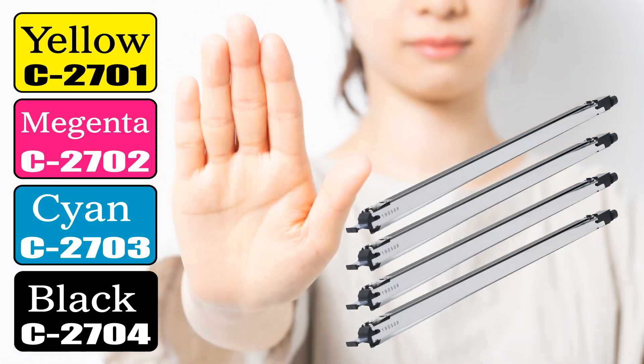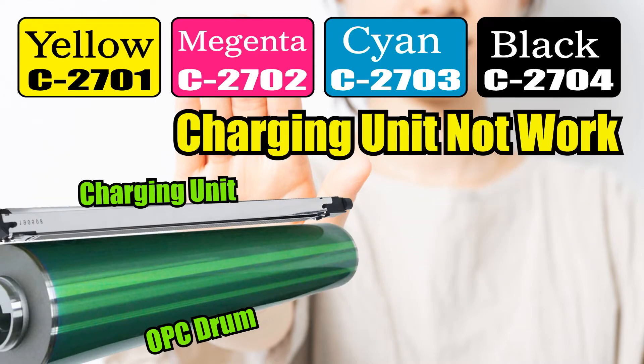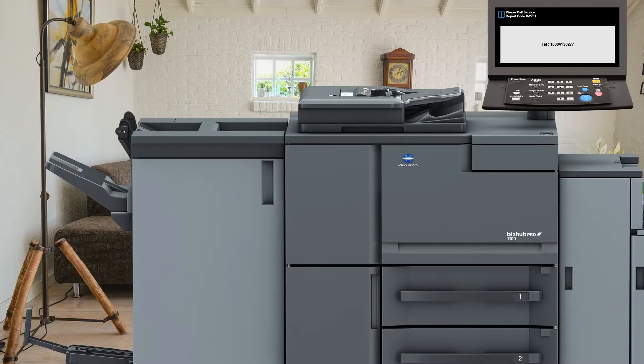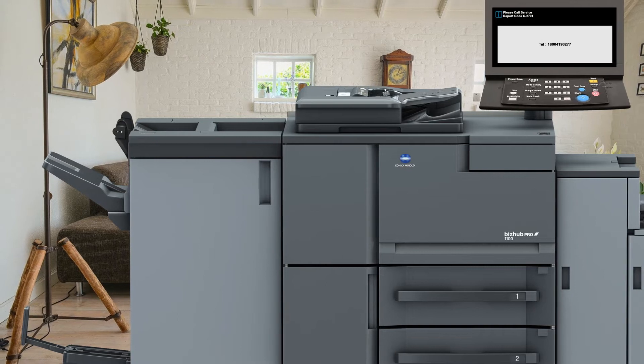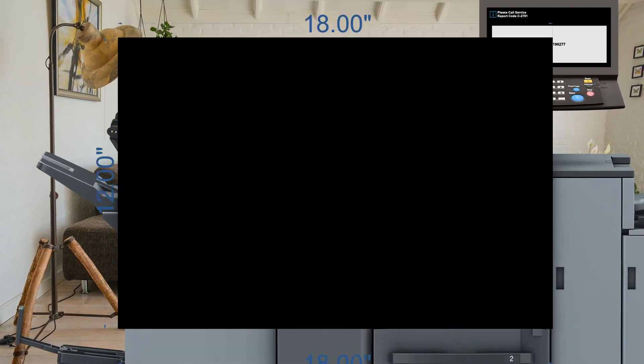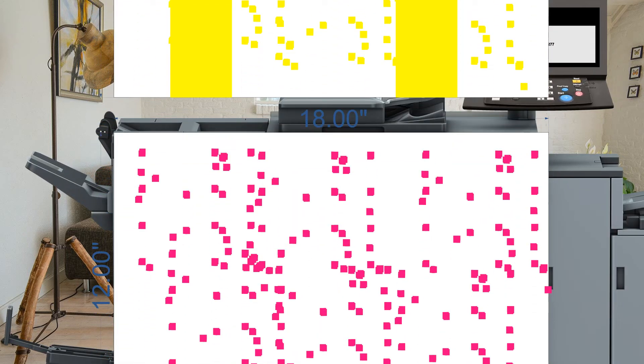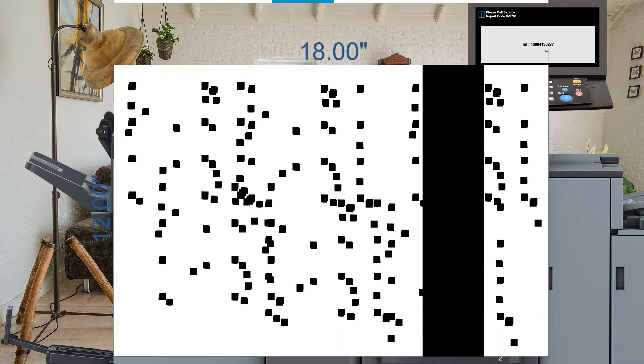Basically this error code means the charging unit is unable to discharge or negatively charge the OPC drum. Normally some time before these error codes, the machine gives solid color prints, for example yellow, cyan, magenta, or black. In some cases if the problem is in two or three charging units, mixed colors like red or green come. Sometimes this color comes in full paper and sometimes comes in line form.